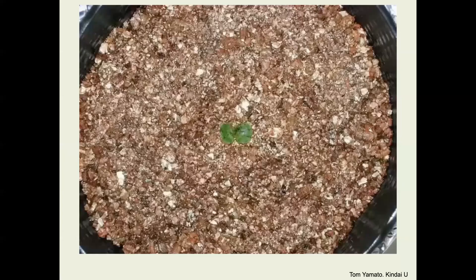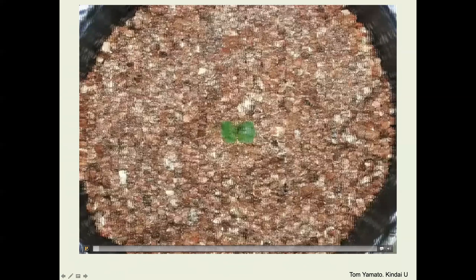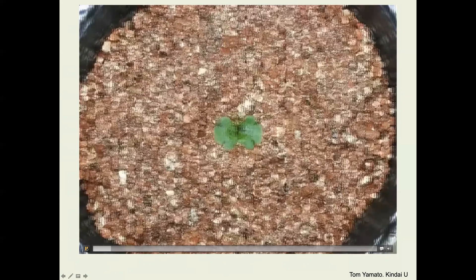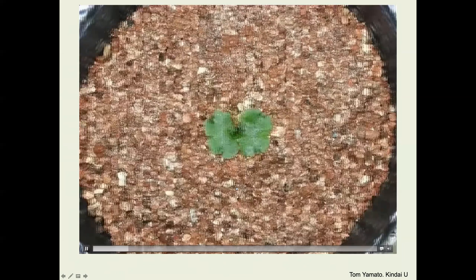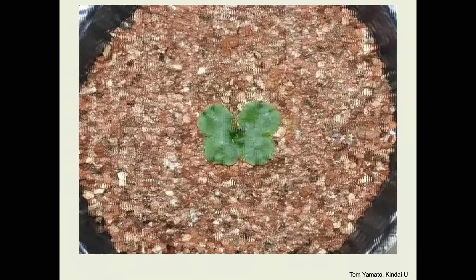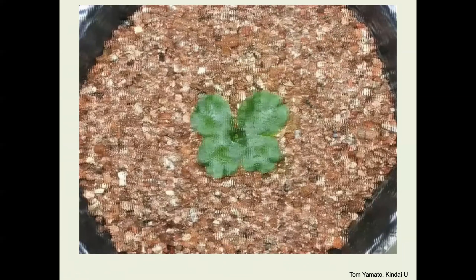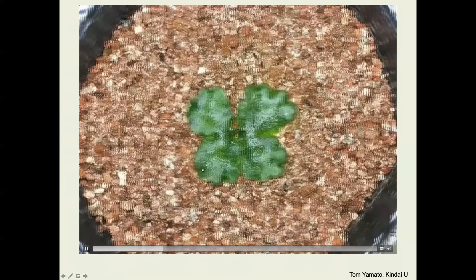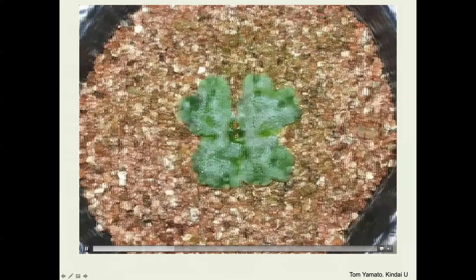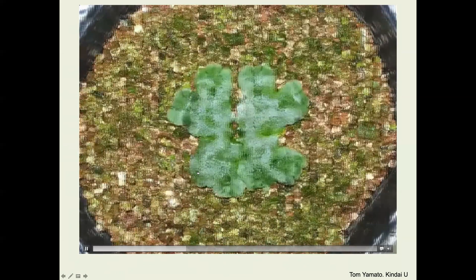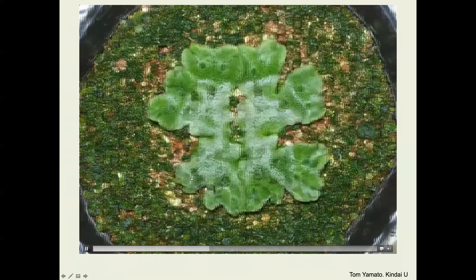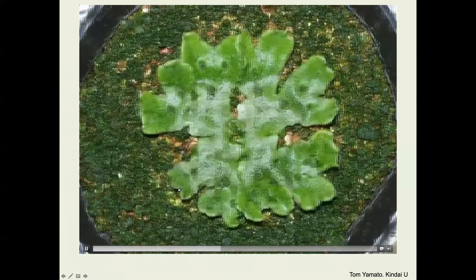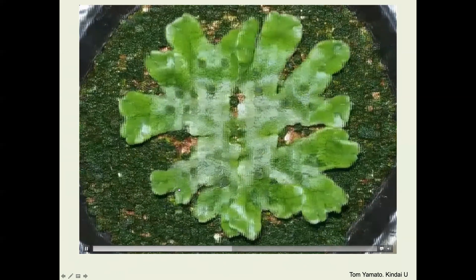I'll end by showing you a little time lapse of our plant growing. You can see that plants have these growing tips, and that these both sense the environment and produce new tissue. A lot of the work that we're doing is focused on these meristems, which are basically groups of stem cells.